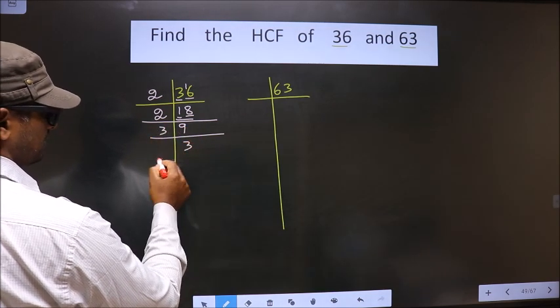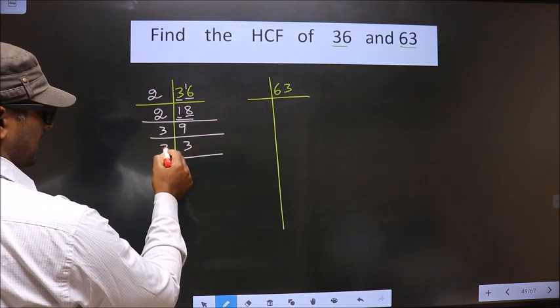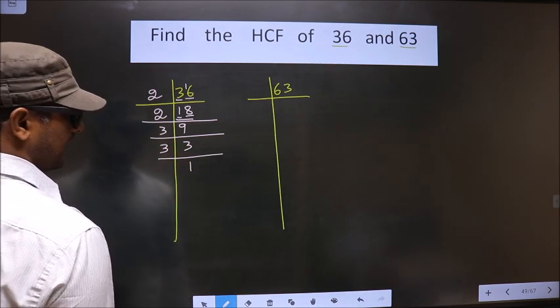Now 9 is nothing but 3 times 3. Now 3 is a prime number, so we take 3 and 1.